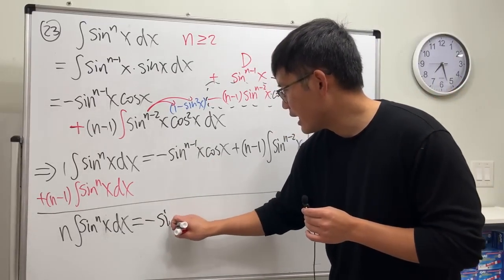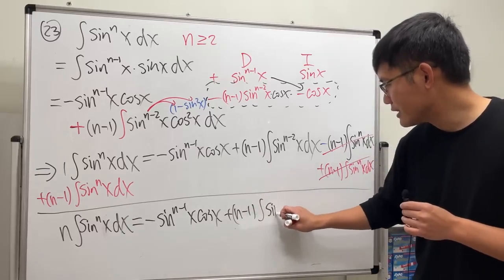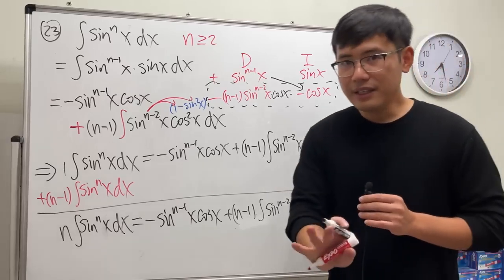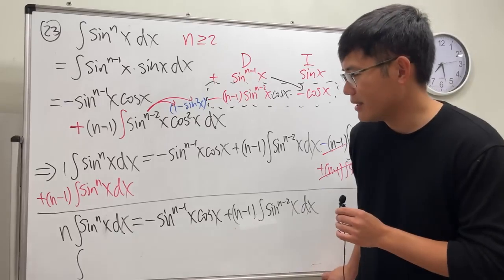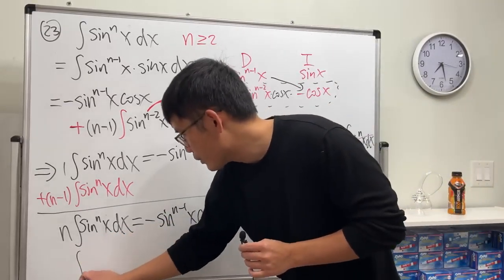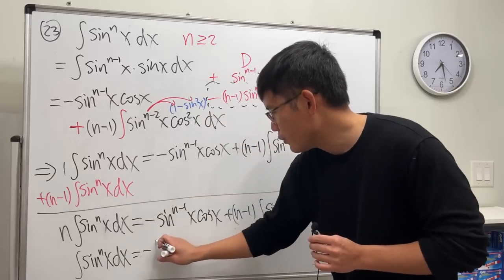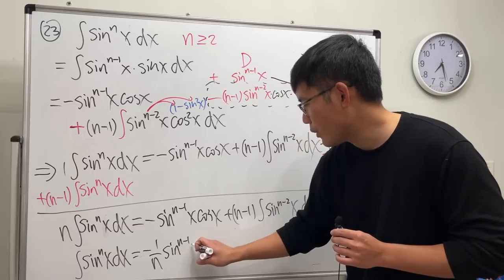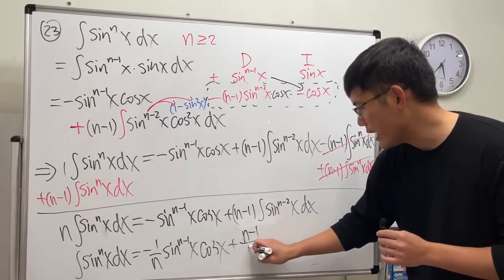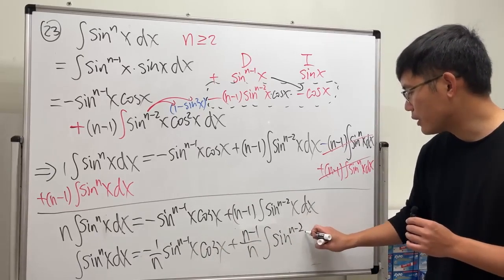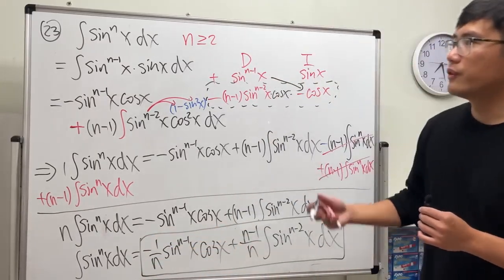Writing it all out: n times the integral of sine to the nth power x dx equals negative sine to the n minus one of x times cosine x, plus n minus one times the integral of sine to the n minus two x dx. Dividing everything by n, the final reduction formula is: the integral of sine to the nth power x dx equals negative one over n times sine to the n minus one x times cosine x, plus n minus one over n times the integral of sine to the n minus two x dx.